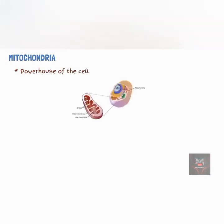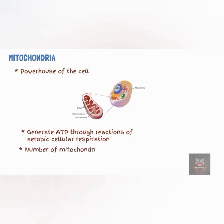The mitochondria is regarded as the powerhouse of the cell because it generates most of the ATP through aerobic respiration. Cells may have as few as a hundred or as many as several thousands of mitochondria, depending on their activity. Cells of organs such as the muscles, liver, and kidneys have large numbers of mitochondria. A mitochondrion consists of an external and internal mitochondrial membrane with a fluid-filled space between them. Mitochondria also play an important role in apoptosis.